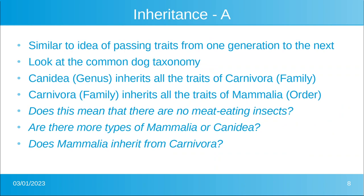What is inheritance? Inheritance is similar to the idea of passing traits from one generation to the next, but not in the connotation of a reproduction cycle. Looking again at the taxonomy of the common dog: canines inherit all the traits of carnivores; carnivores inherit all the traits of mammals. Does this mean there are no meat-eating insects? And are there more types of mammals or more types of canines? Does being a mammal inherit from being a carnivore?